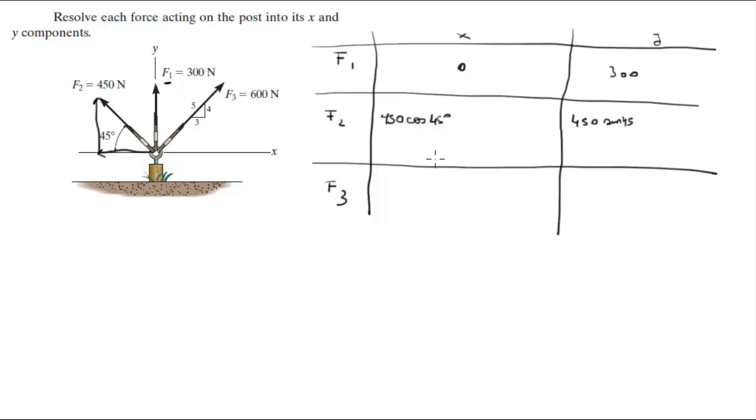Cosine of 45 and sine of 45 are the exact same value therefore both X and Y are the exact same thing and this is negative 318.2.